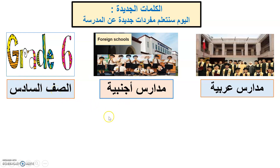Somebody can tell me a sentence. أنا في الصف السادس في مدارس أجنبية. I say: في مدرسة أجنبية — أتعلم في مدرسة أجنبية — only one school. For plural: مدارس أجنبية.